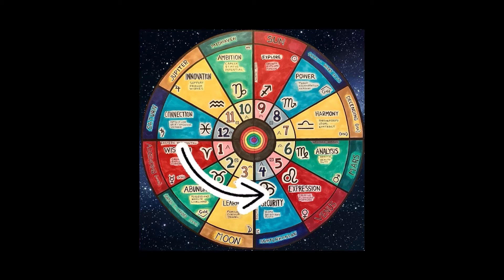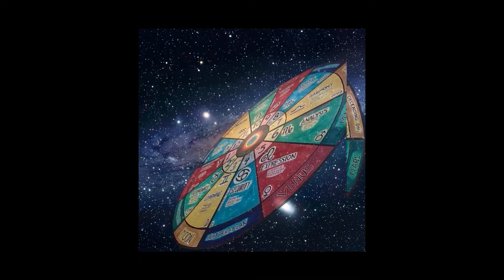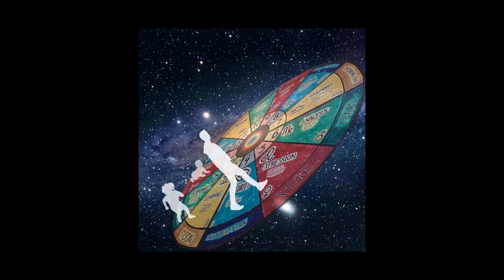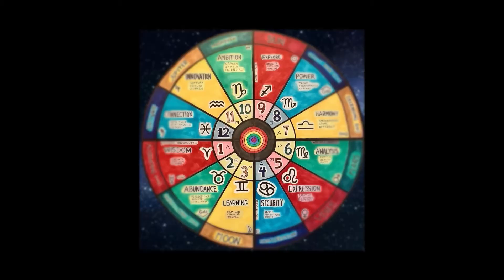Then you move counterclockwise. Imagine you're on a journey: the signs represent how you go on this journey, the points and planets are how you express yourself on this journey, and the houses are where it's going to be playing out — where the energy will be focused.